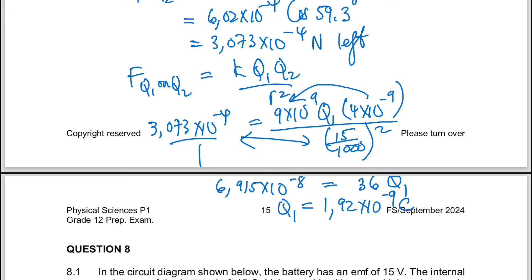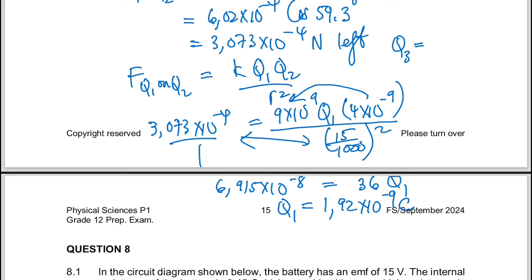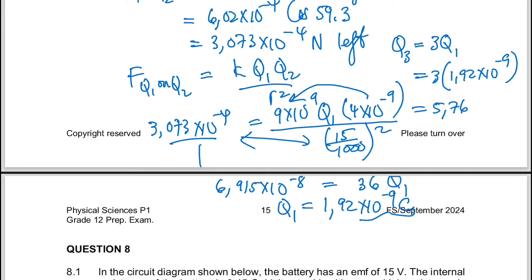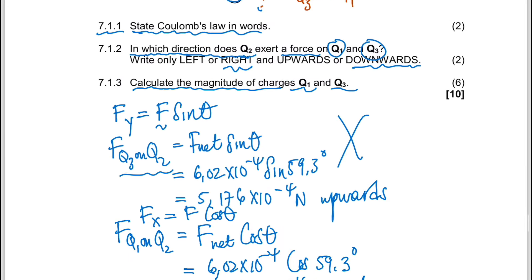Now we can get Q2.3. Remember, Q2.3 is 3 times bigger than Q2.1. So Q2.3 = 3 × 1.92×10⁻⁹ = 5.76×10⁻⁹ coulombs. That's it with this electrostatics question.